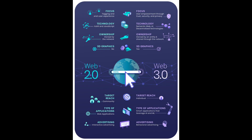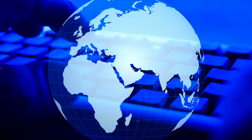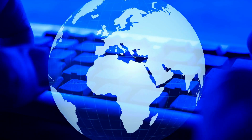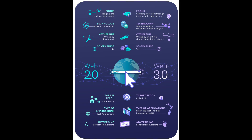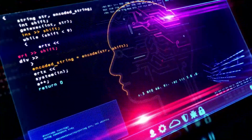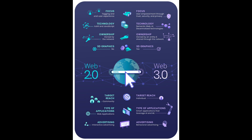3D graphics really didn't exist in Web 2.0, but 3D graphics and the metaverse will be a big part of Web 3.0. The target reach was a specific community in Web 2.0, while Web 3.0 will be more heavily focused on the individual — or at least that's the dream. Types of applications were mostly web and mobile apps in Web 2.0, whereas Web 3.0 applications will leverage AI and machine learning. Advertising, which funds much of the internet's growth, was more interactive in 2.0 but will be very behavioral-focused in 3.0.